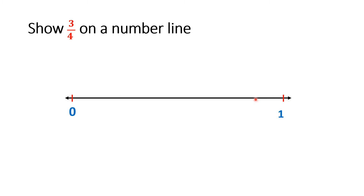Look at the fraction given in the question and find your denominator. Divide your number line into that many equal parts. I have to divide my number line into four equal parts because my denominator is four. So here is the first part, second part, third part, and the fourth part is already given — my number line is now divided into four equal parts.